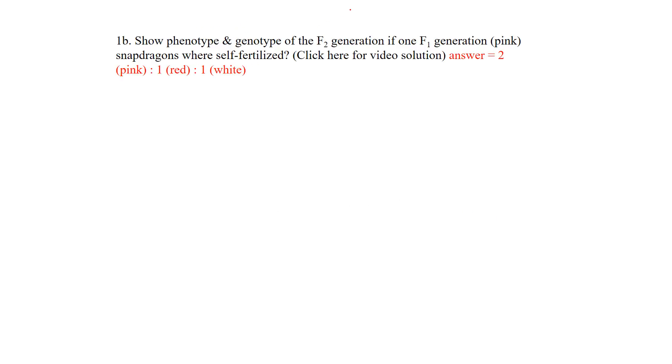The question asks: show the phenotype and genotype of the F2 generation if one F1 generation were self-fertilized. In the previous question 1A, which has a video, we discussed pink offspring—all of the F1 generation were pink.